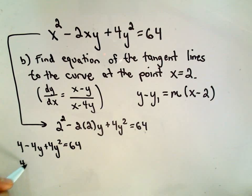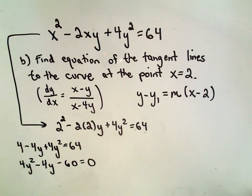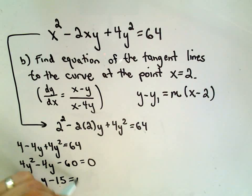And equivalently, I can write this as 4y squared minus 4y. If I subtract 64, I'll get negative 60 on the left equals 0. And at this point, I would divide everything by 4. I think we'll get y squared minus just y minus 15 equals 0.